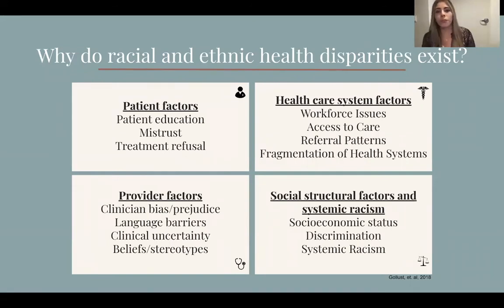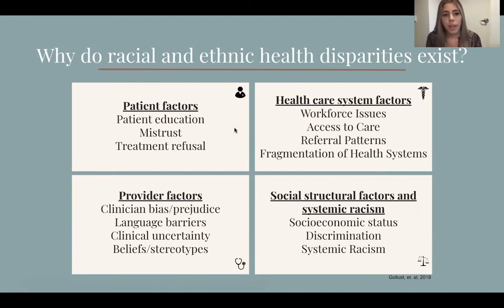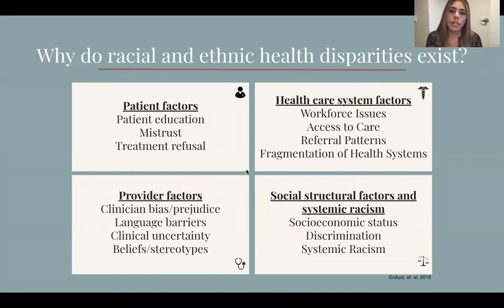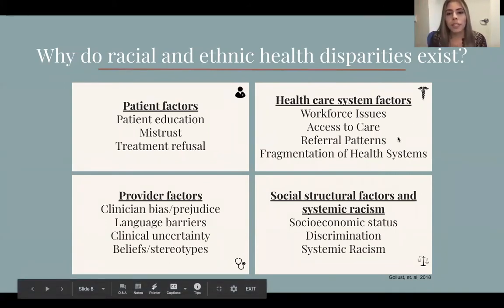There are four main factors that explain why racial and ethnic disparities exist: patient factors, provider factors, health care system factors, and social structure factors and systemic racism. I'll spend the next few slides delving deeper into how each factor contributes to health disparities. There is a symbol for each factor indicated on the top right of the following slides.